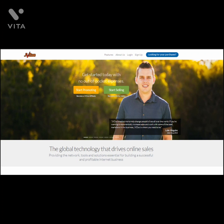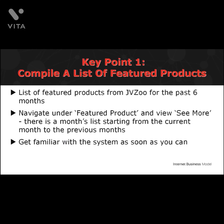Where do you understand the market needs? First, create an account on jvzoo.com — the most well-known affiliate site among internet marketers. It's a marketplace for product creators and affiliate marketers to market various digital products, ranging from e-books, video tutorials, software, apps, and plug-ins. Second, compile a list of featured products of the past six months. You can find this information under the Featured Products section in JVZoo.